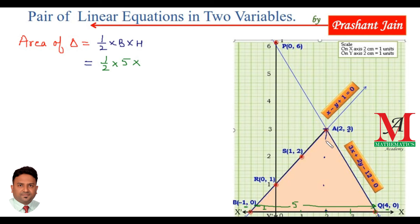It means the distance from here to here is 3 units. You can find with the help of the scale also. If the scale you have taken is 1 centimeter equals 1 unit, height is 3. So, on calculation, 15 upon 2 square units is the area of this triangle.